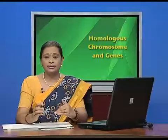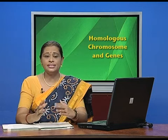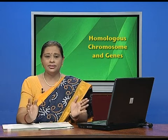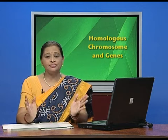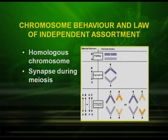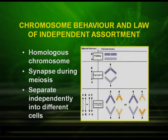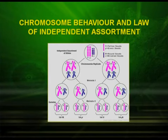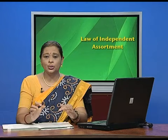Now let us discover how the chromosome and the gene behave in a similar way in independent assortment, as proved in Mendel's experiment. In Mendel's dihybrid cross, the alleles assort independently in the F2 generation, meaning recombinant types were formed. In the same way, in chromosome behavior, the homologous chromosomes synapse during meiosis, but they separate independently into different cells during gamete formation. The following picture illustrates how homologous chromosomes get separated and how the cells formed have different random combinations with recombinants.